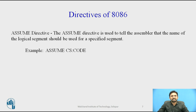The next directive is ASSUME. The ASSUME directive is used to tell the assembler the name of the logical segment to be used for a specified segment. The 8086 works directly with only 4 visible segments: code segment, data segment, stack segment, and extra segment. For example, 'ASSUME CS:CODE' tells the assembler that the logical segment named 'code' contains the instruction statements for the program and should be treated as a code segment.